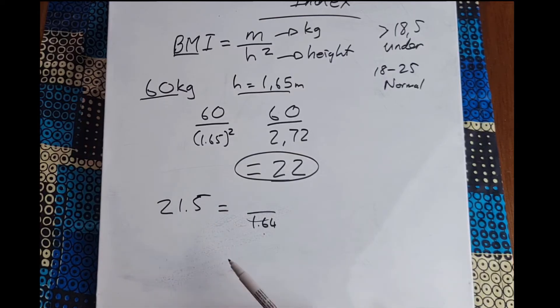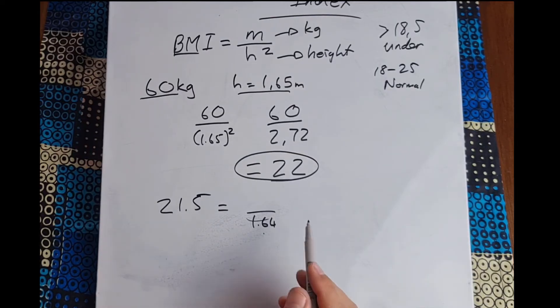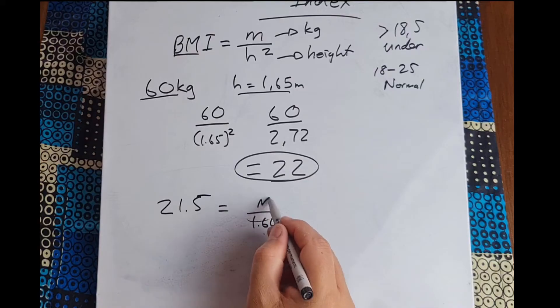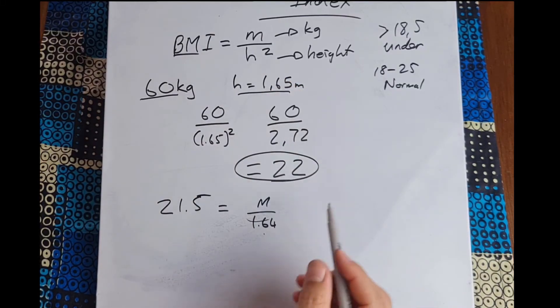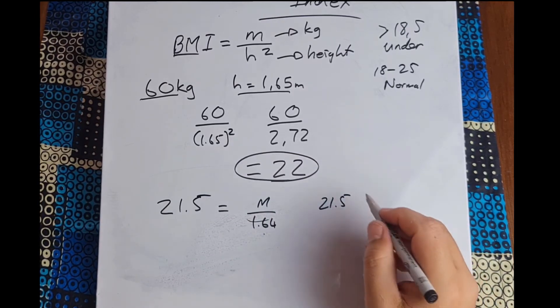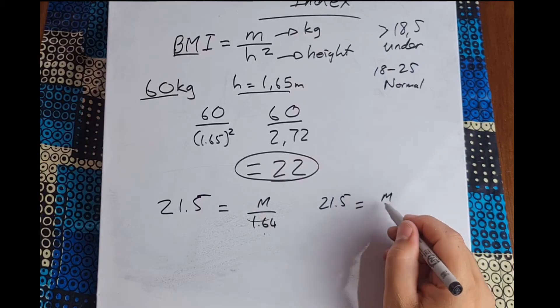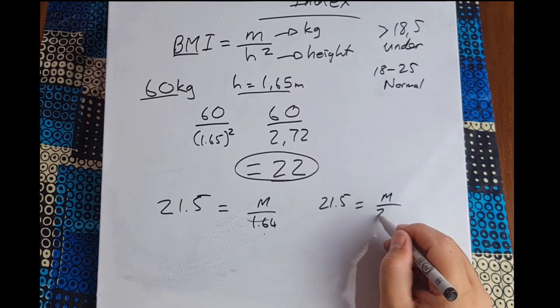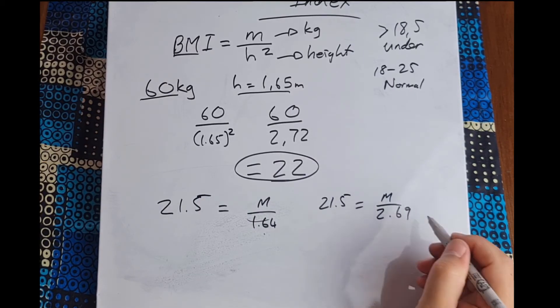Okay, so one of the first things I'm going to do is just put the m in here. One of the first things I'm going to do is just work out the h squared properly. So it'd be 21.5 and that would be equal to m over, and it's 2.69. Okay, so I have that in place.